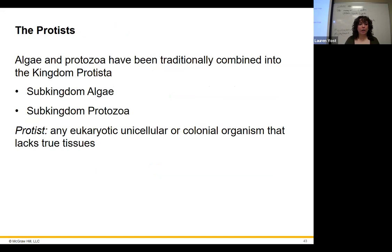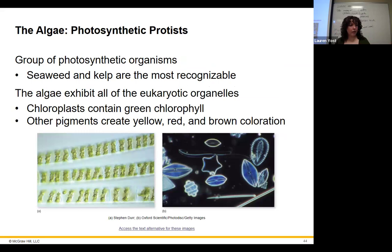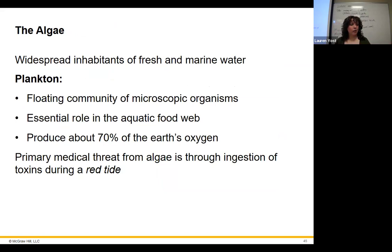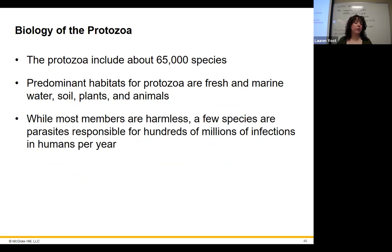Moving on to the protists — the Protista kingdom. Protista is kind of anything that doesn't have true tissue, so that includes algae and protozoa. The algae are photosynthetic protists — they make most of the oxygen in our environment, include seaweed and kelp, and are a big part of plankton. The algae in plankton make about 70% of the atmospheric oxygen.